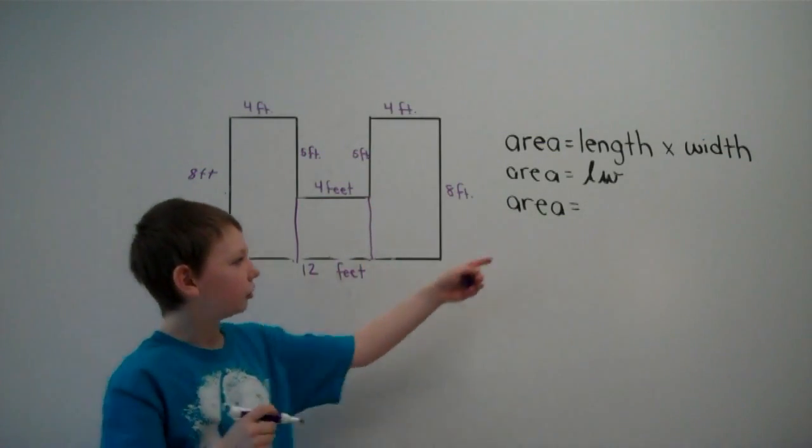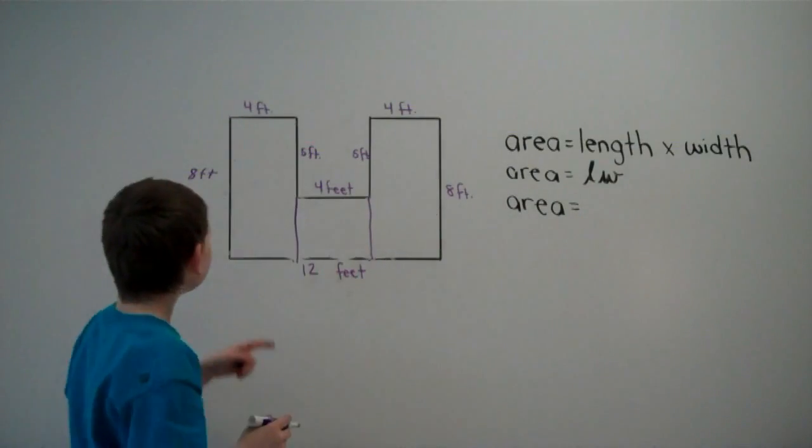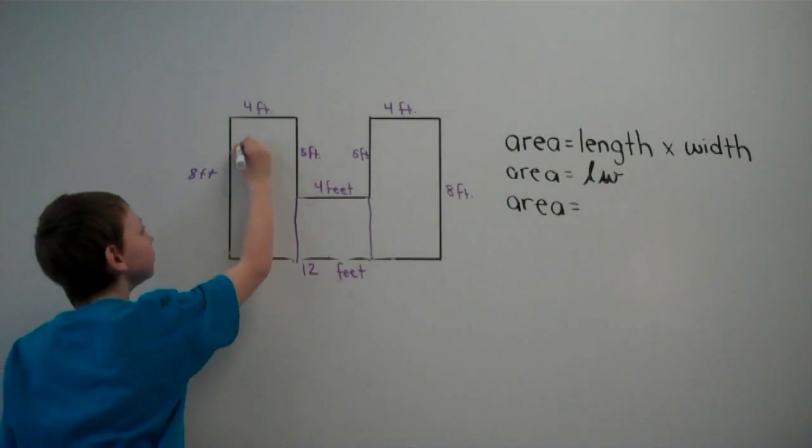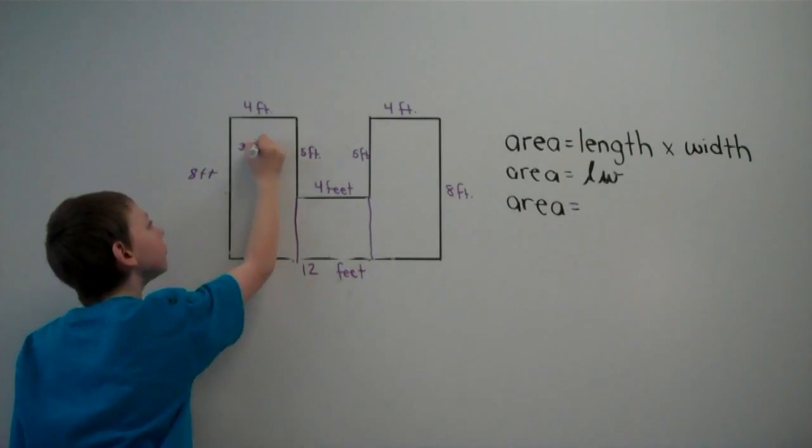So to find the area, we'll have to do length times width. So 8 times 4 equals 32 square feet.